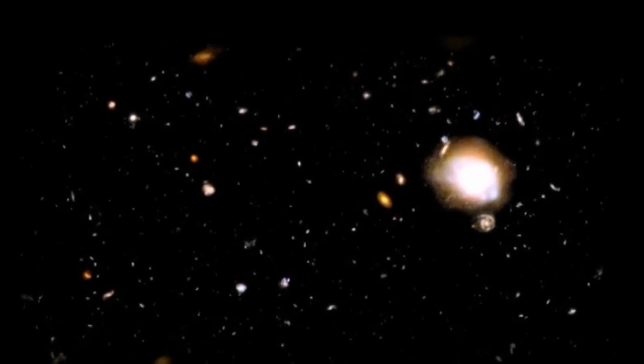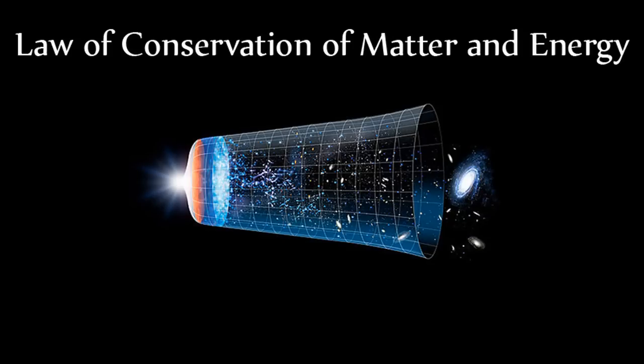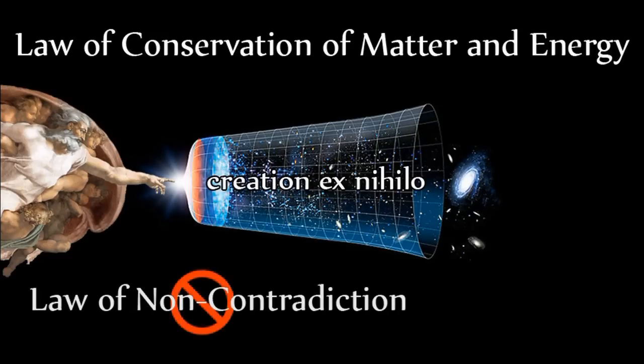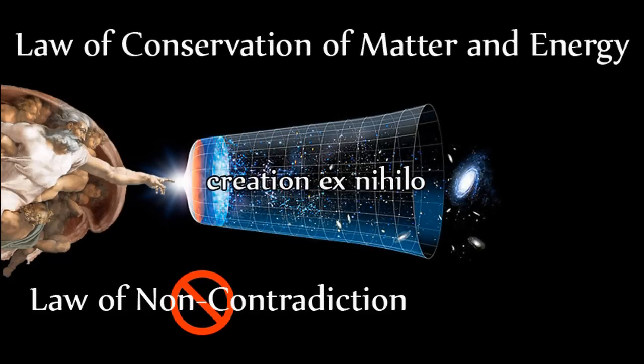This means, for our universe, creation ex nihilo is a logical contradiction. The conservation of matter and energy is a property of the universe's nature, and to violate this nature would be to violate the law of non-contradiction, to make the nature of the universe something other than what it is. But as we've agreed, God cannot do the logically impossible, like creating square circles. A universe where matter and energy are conserved cannot be created from nothing, for that would serve to make A not A, which is a logical contradiction.